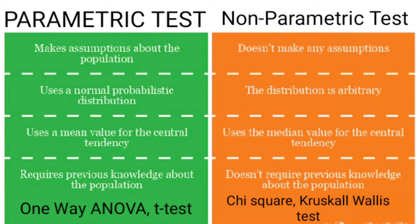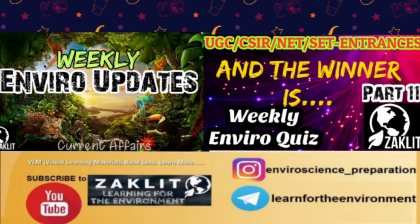Here is a table showing differences between parametric and non-parametric tests. First, parametric tests make assumptions about the population; non-parametric tests do not. Second, parametric tests use a normal probability distribution; non-parametric distribution is arbitrary. Third, parametric tests use mean for central tendency; non-parametric tests use median. Fourth, parametric tests require prior knowledge about the population; non-parametric tests do not. Examples: parametric — one-way ANOVA and t-test; non-parametric — chi-square and Kruskal-Wallis test.